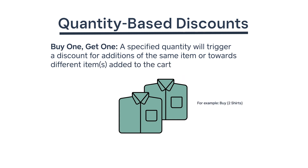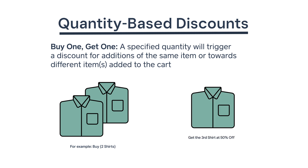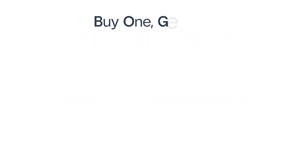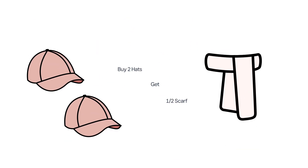Buy one, get one: when a customer buys a specified quantity of an item or category, a discount will apply towards additions of the same item or towards different items added to the cart. For example, you can create a BOGO discount so that when a customer purchases two hats, they'll receive 50% off the cost of a scarf.